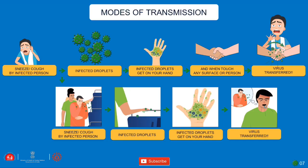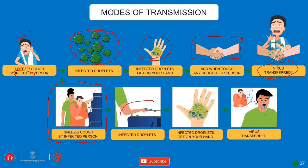Following the flowchart: an infected person sneezes or coughs, placing infected droplets on their hands. These droplets transfer to another person when they shake hands. If the person sneezes directly into their hand and then touches bus chairs, the virus sits on that surface. Another person touches the same chair, and the virus transfers to them. This is how the virus spreads — taking precautionary measures stops transmission.